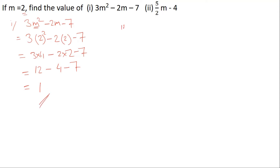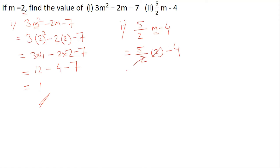Next let us solve part 2. It is 5/2 m minus 4. Same — in place of m we will put the value 2. So we write 5/2 into 2 minus 4. The 2s cancel, so it will be 5 minus 4. The answer will be 1.